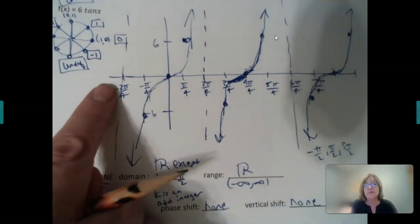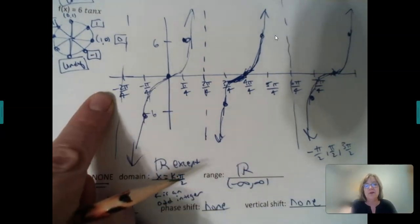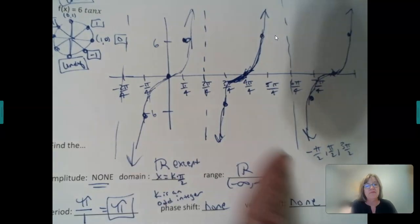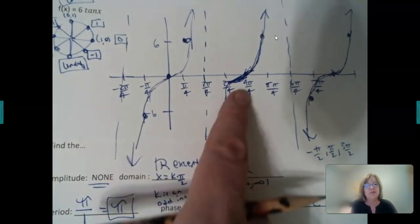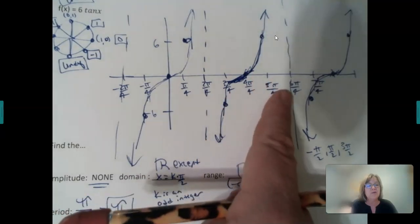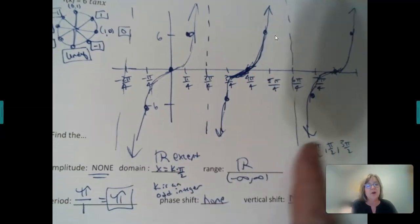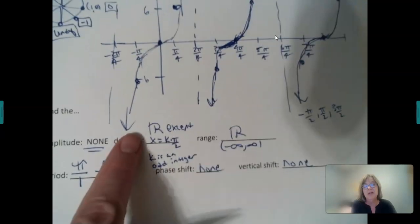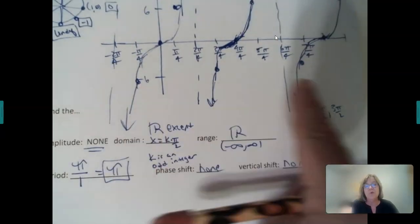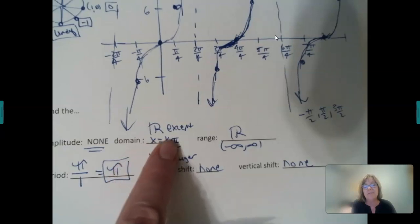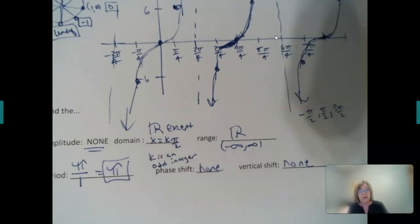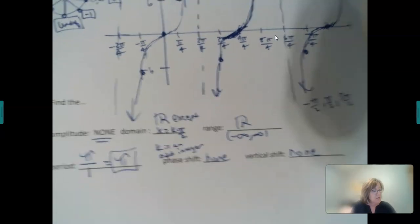Now, look at your asymptotes, you have one at negative 2 pi over 4, that's a negative pi over half, you have one at 2 pi over 4, that's pi over 2, 6 pi over 4, which is 3 pi over 2. So those are all the odd pi over 2s. So for your domain, you're going to have all reals, except every time you hit an odd pi over 2. So you're going to say x equals k pi over 2, if k is an odd integer, those are going to be your exceptions.